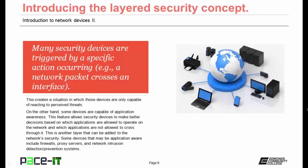Many security devices are triggered by a specific action occurring, as in a network packet crosses an interface on a router. This creates a situation in which those devices are only capable of reacting to perceived threats, which in itself can be a weakness in security. On the other hand, some devices are capable of application awareness. This feature allows security devices to make better decisions based on which applications are allowed to operate on the network and which are not allowed to cross through it. This is another layer that can be added to the network's security.